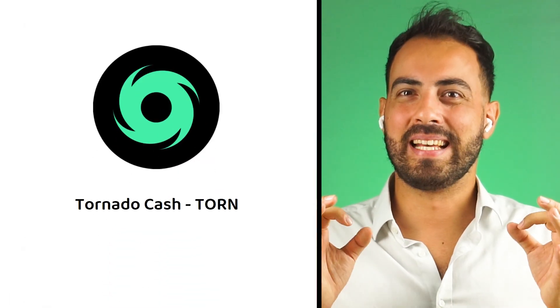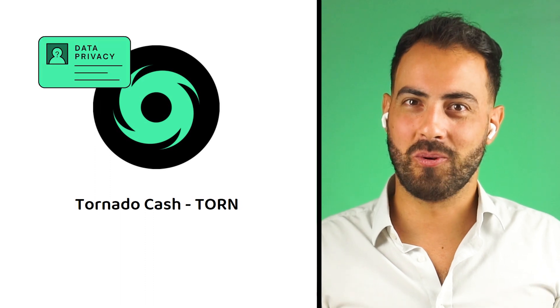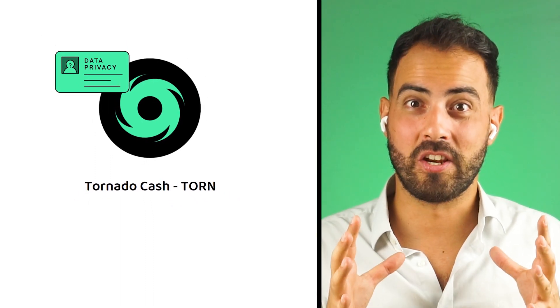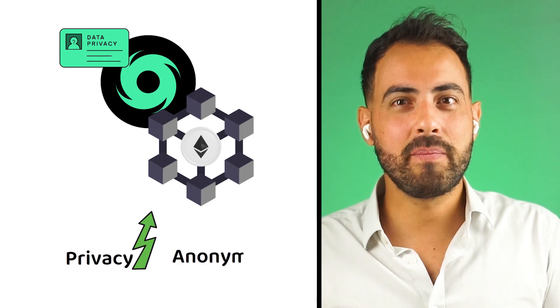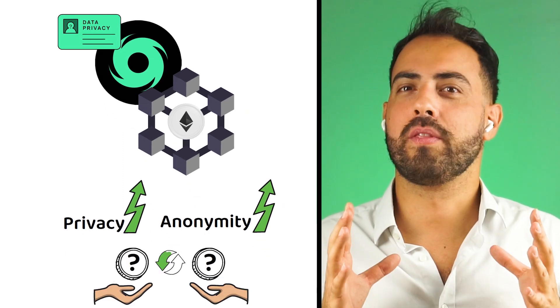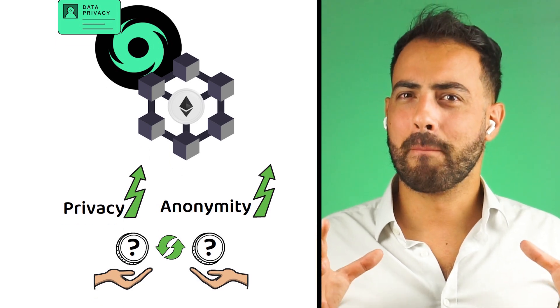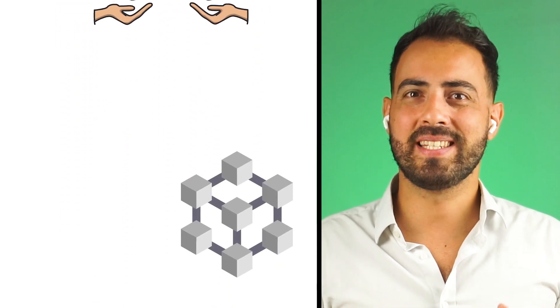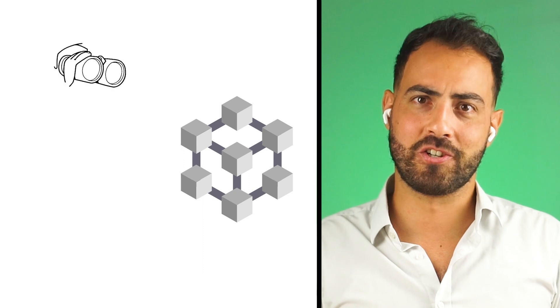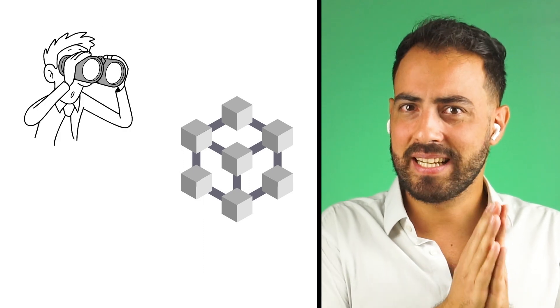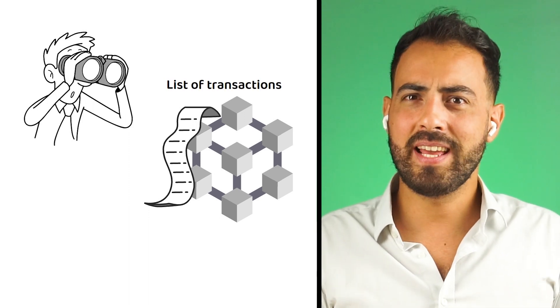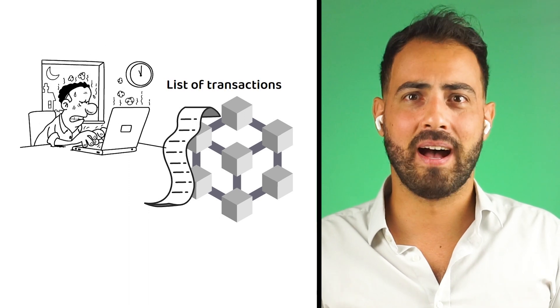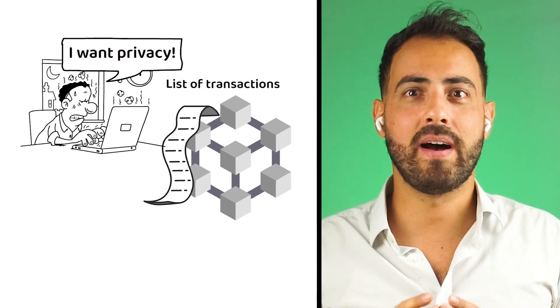Tornado Cash, also known by the market ticker TORN, is a decentralized privacy solution built on the Ethereum blockchain that aims to enhance the privacy and anonymity of cryptocurrency transactions on the Ethereum network. By default, most blockchains are publicly viewable ledgers, meaning every transaction can be viewed by anyone at any time. Naturally, not everyone is a fan of having such publicly viewable finances.